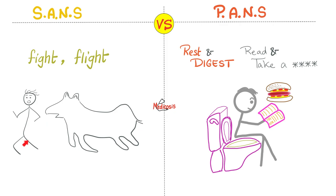Constrict the sphincter so that urine does not leak out. Conversely, if you are in parasympathetic land — the land of rest and digest — eat, read, and take a dump. If you're taking a dump, you want to urinate and void. So you need to contract the wall of the bladder but relax the sphincter.